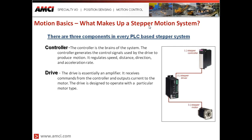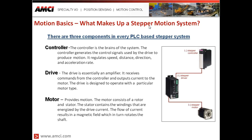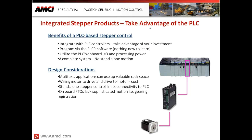The drive is essentially an amplifier — it receives commands from the controller and outputs current to the motor. The drive is designed to operate with a particular motor type, and can be either AC or DC powered. The motor provides motion. It consists of a rotor and stator; the stator contains the windings that are energized by the drive current. The flow of current results in a magnetic field which in turn rotates the shaft.